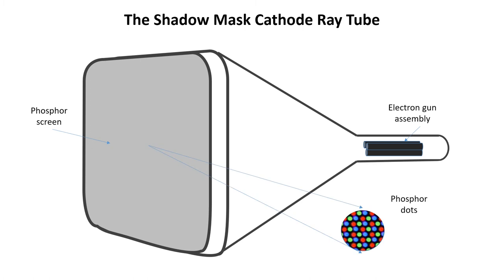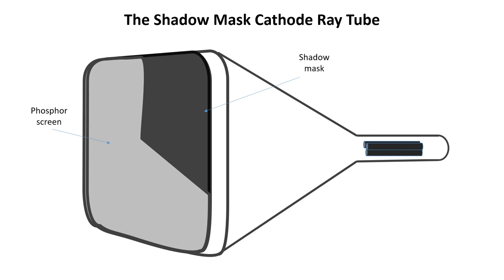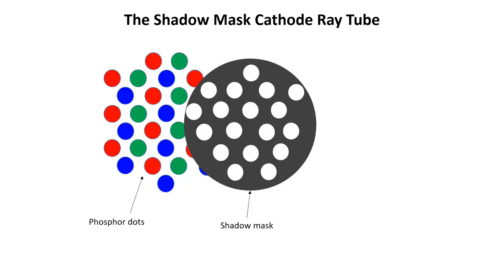When magnified the phosphor dots are as shown. A metal sheet called a shadow mask with a large number of very small holes in it was placed inside the tube just behind the phosphor screen as shown in the diagram. The phosphor screen has been cut away to reveal the shadow mask. This picture shows a magnified section of the shadow mask and phosphor dots. The holes in the shadow mask are made small enough so that the appropriate electron beam passes through to the phosphor screen to excite the correct phosphor dot.